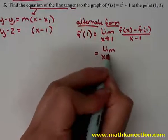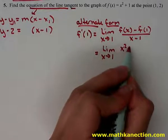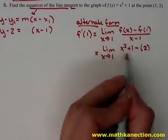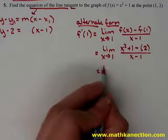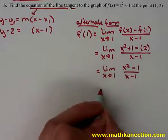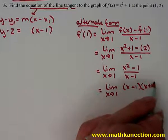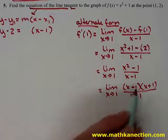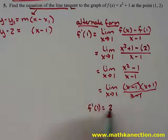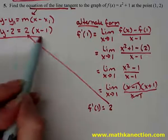So we have the limit as x approaches 1 of x squared minus 1, minus f of 1, which was given as 2, all over x minus 1. This simplifies to x squared minus 1 minus 2, which is x squared minus 3, over x minus 1. Wait — that factors as x minus 2 times x minus 1 over x minus 1. The x minus 1s reduce, substitute in 1, and we get 2. So the slope at 1 is 2, which we place into our tangent line equation to get the answer.